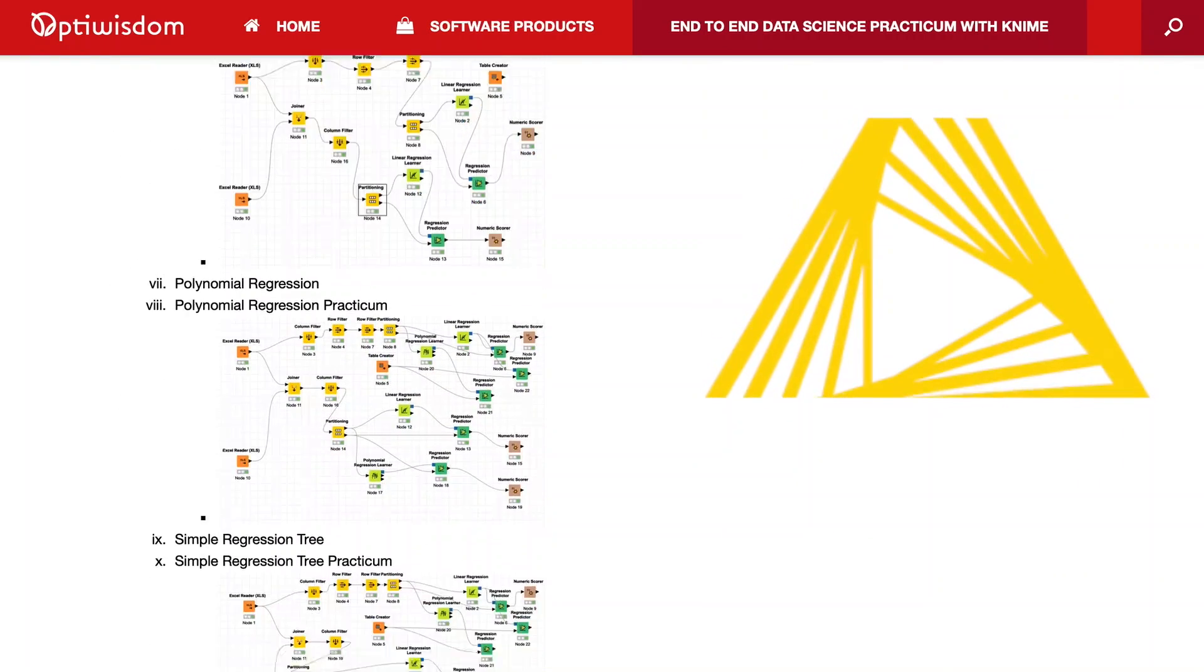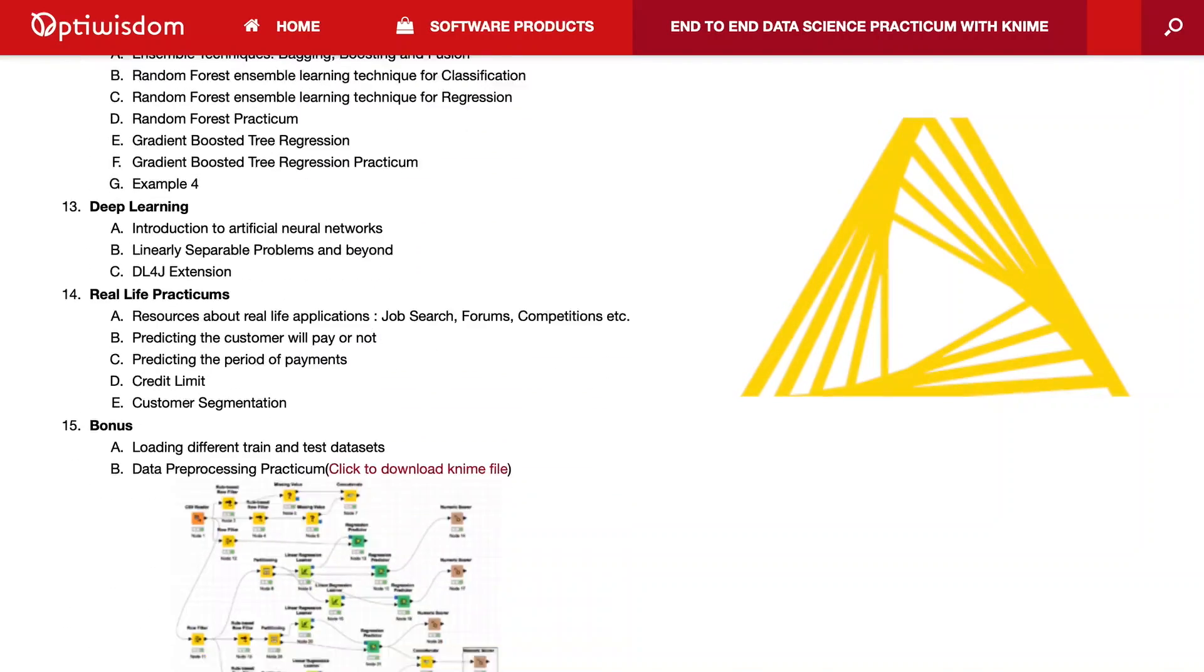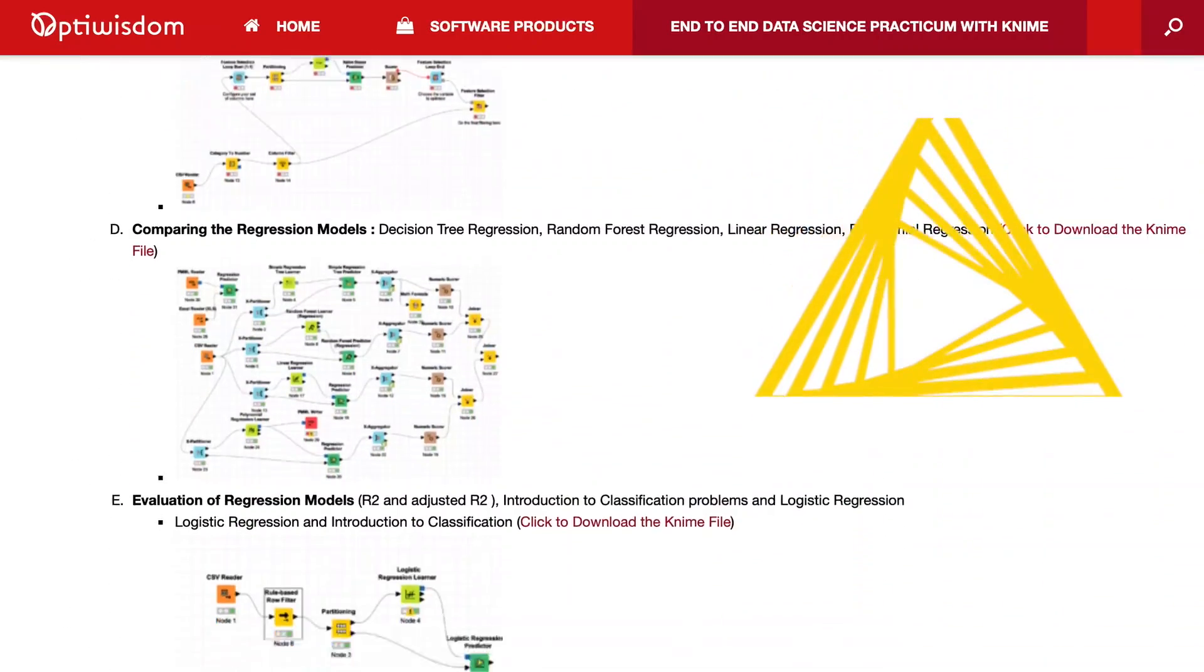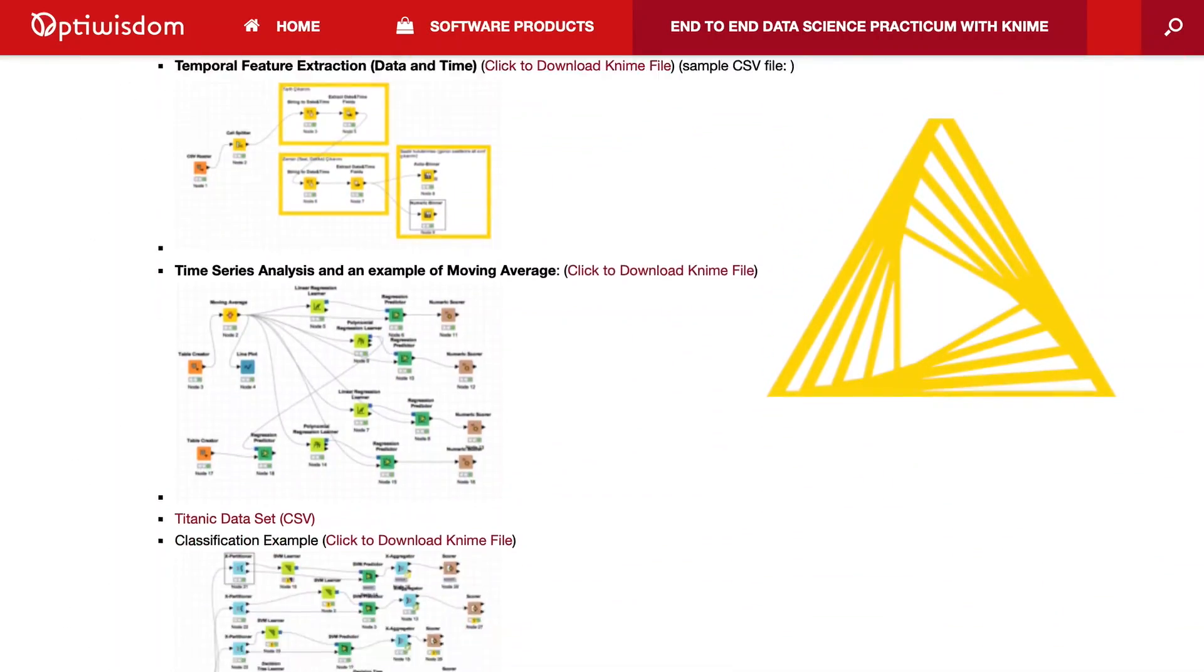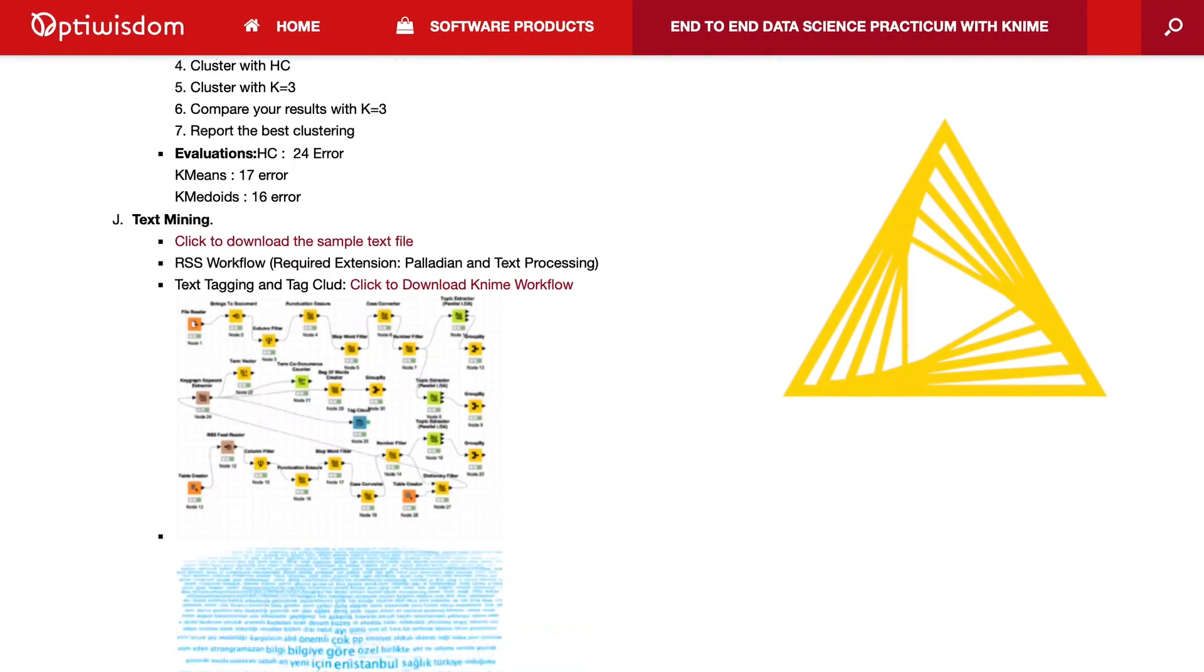You don't need to write any single line of code for completing your data science projects with KNIME. KNIME is an open source project and you can get the source code and use it in your own professional projects.